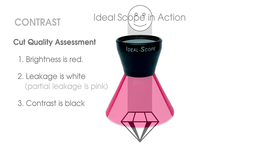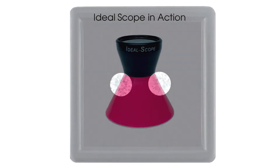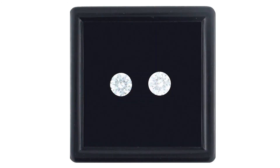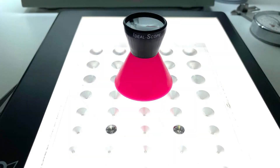Now let's see IdealScope in action. Check out these stones. Under jewelry store spotlights, they both seem big and bright. We have an 80-pointer on the left and a 1-carat stone on the right. If both cost the same amount, you might be tempted to buy the 1-carat stone. Before you do, let's see them in IdealScope.